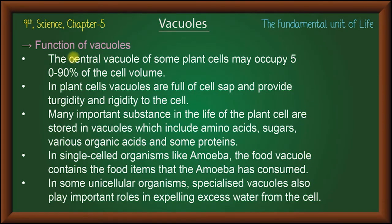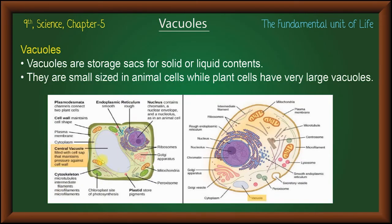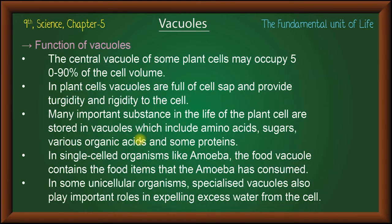Function of vacuoles: the central vacuoles of some plant cells occupy 50 to 90% of the cell volume. In plant cells, vacuoles are full and provide turgidity and rigidity to the cell.